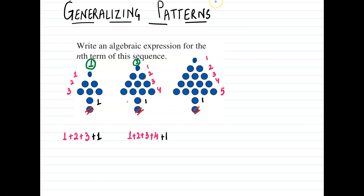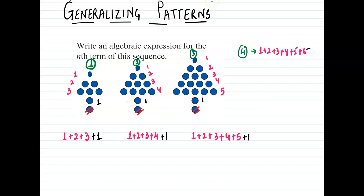For the third figure, we have one plus two plus three plus four plus five, plus one. For the fourth figure, it's going to be one plus two plus three plus four plus five plus six, plus one. So for four we go up to six, for three we go up to five, for two we go up to four — always two more than the figure number.